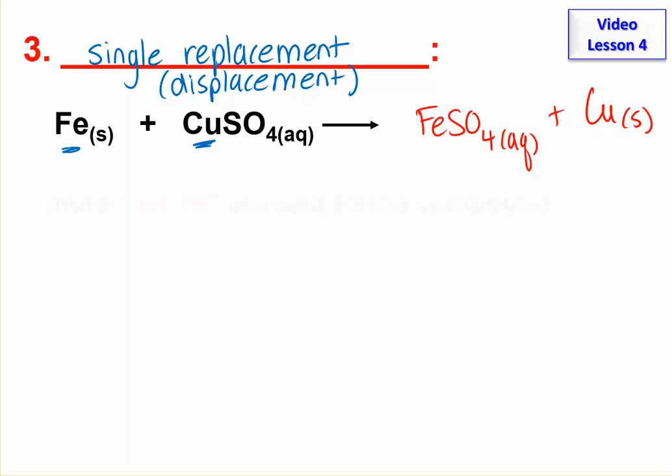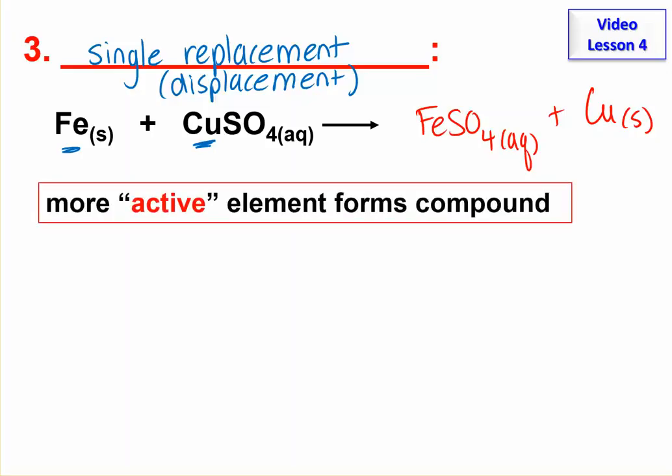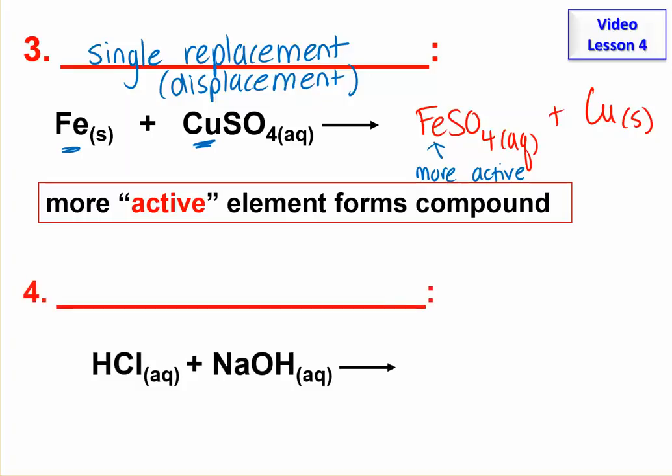And something you need to know about those is that more active element forms the compound. So in this case, the more active element is the iron. And we'll get into later how you know which one is more active and all of that. But for now, that'll do. The more active one ends up in the compound. It's kind of like it wins the battle. Okay, last type.